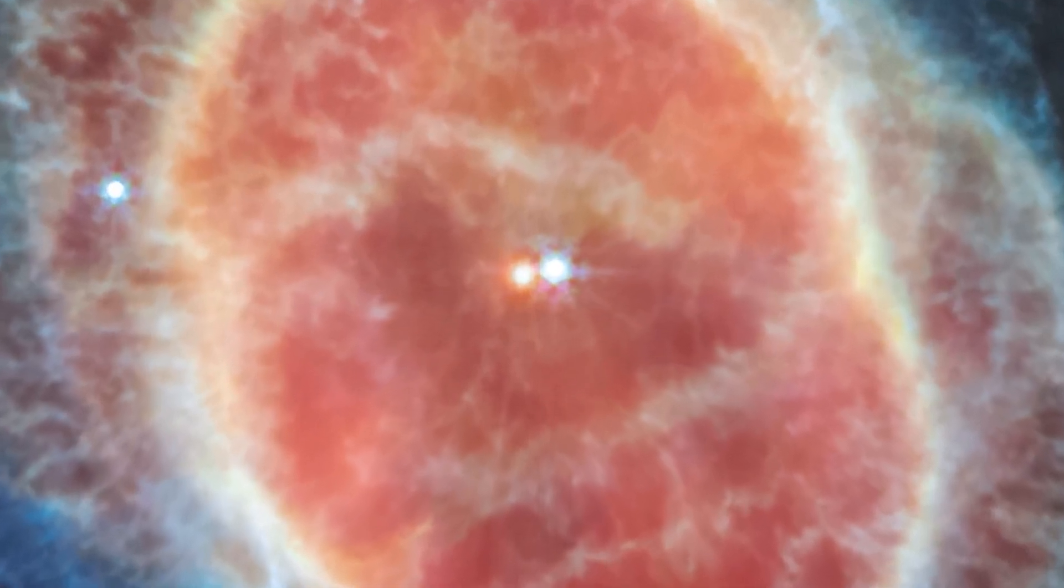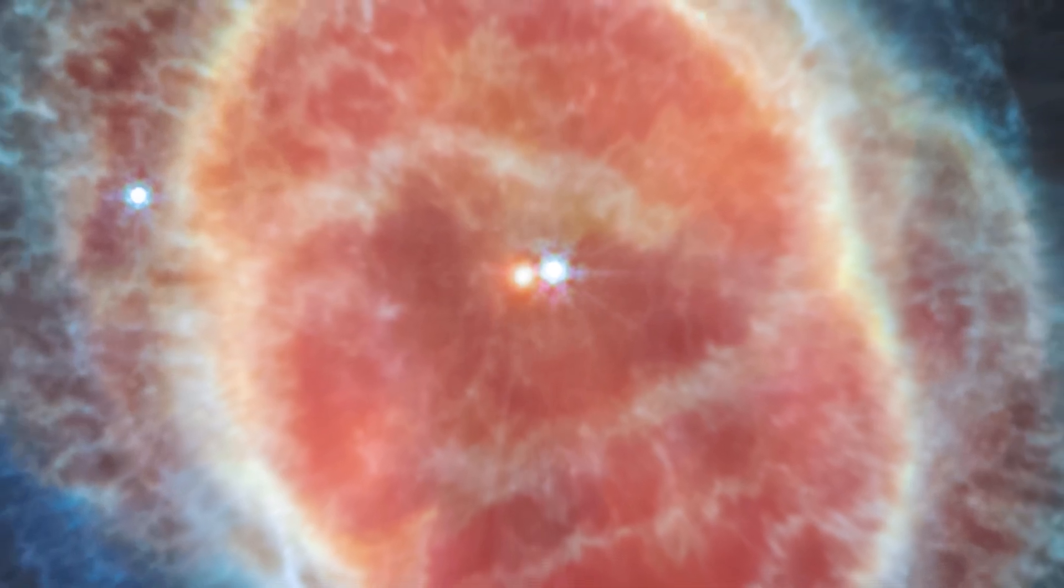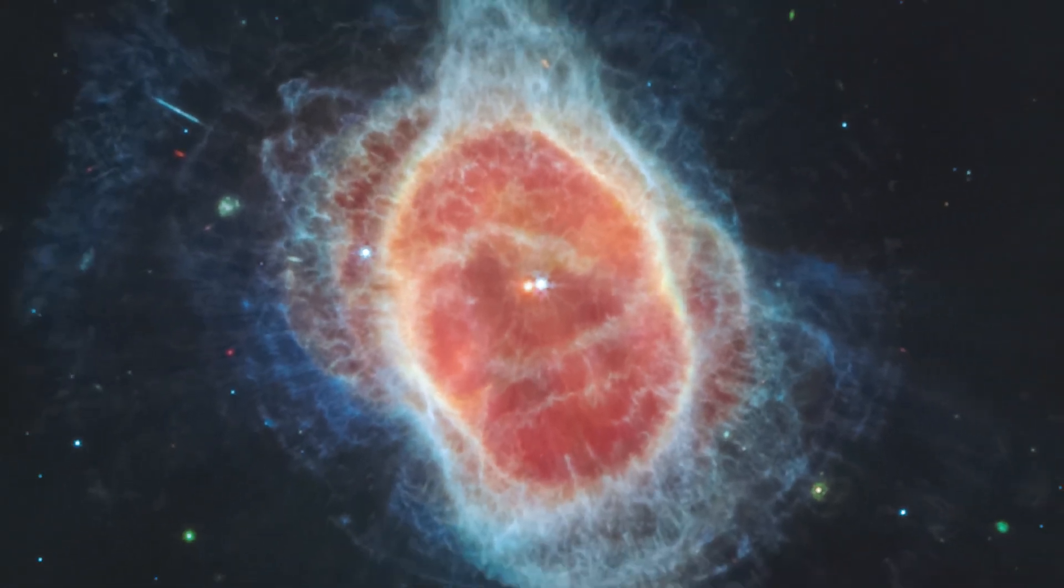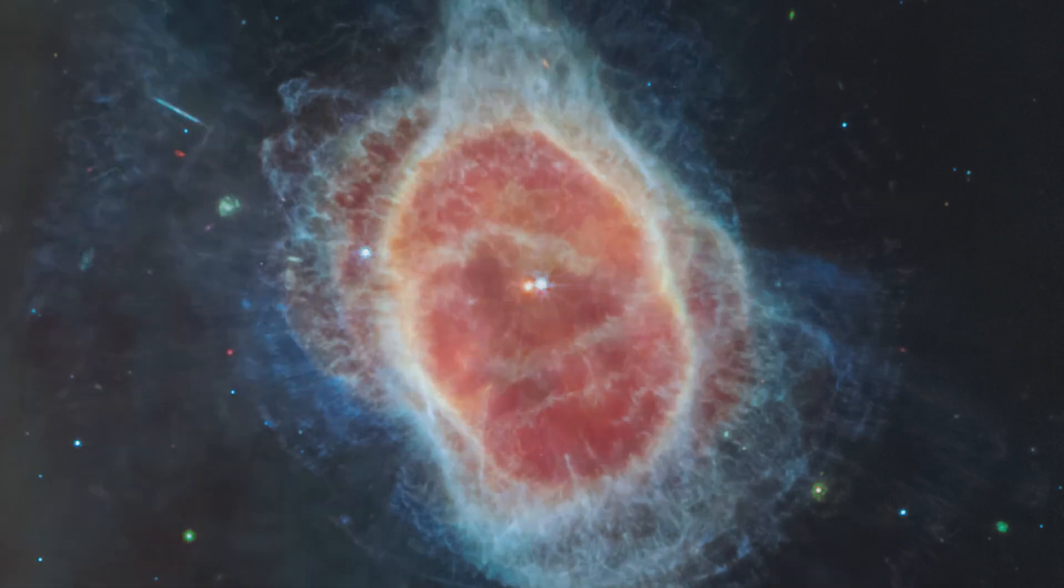As it transformed into a white dwarf, the star periodically ejected mass—the shells of material you see here—as if on repeat. It contracted, heated up, and then pulsated, unable to push out more material. At this stage, it should have shed its last layers. So why is the red star still cloaked in dust? Was material transferred from its companion? Researchers will begin to pursue answers soon.